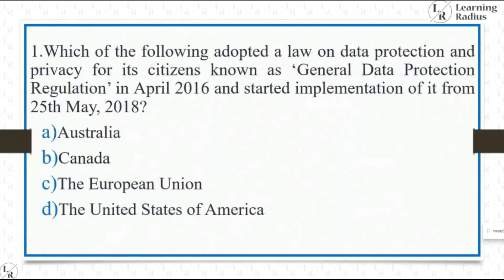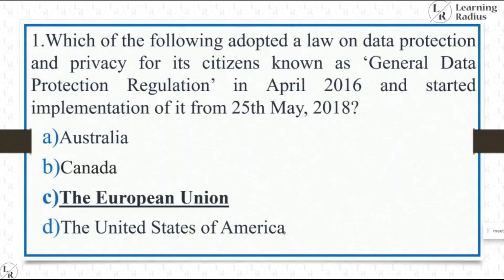The first 2019 question: Which of the following adopted a law on data protection and privacy for citizens known as the General Data Protection Regulation in April 2016 and started implementation from 25th May 2018? Options: Australia, Canada, European Union, or United States of America. Comparatively a very easy question. We know the General Data Protection Regulation is directly related with the European Union.